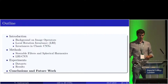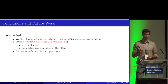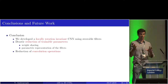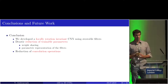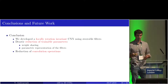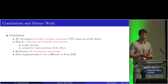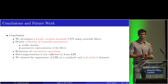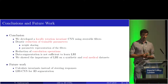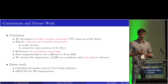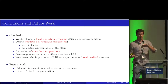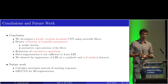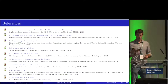In conclusion, we developed a locally rotation invariant CNN using steerable filters, achieving a drastic reduction of trainable parameters due to weight sharing across orientations and the parametric filter representation, as well as a reduction of convolution operations. We showed that data augmentation is not sufficient to learn local rotation invariance, and demonstrated the importance of built-in local rotation invariance on both synthetic and real medical datasets. As future work, we want to calculate invariants directly from the spherical harmonic responses instead of steering over a large set of orientations, and apply our method to deep 3D segmentation.